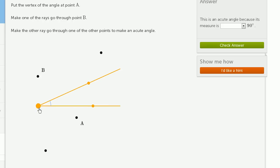Put the vertex of the angle at point A. Let me do that. Make one of the rays go through point B. Make the other ray go through one of the other points to make an acute angle.